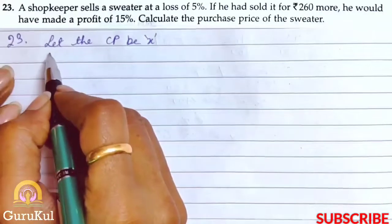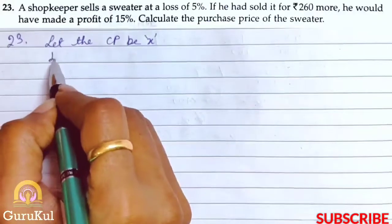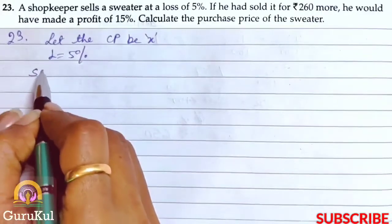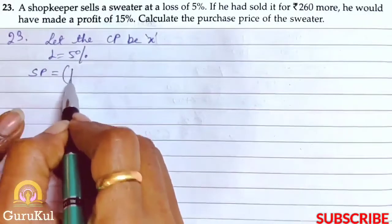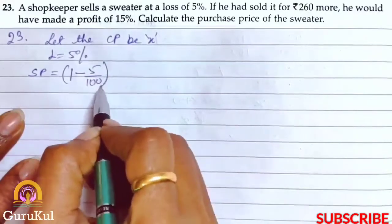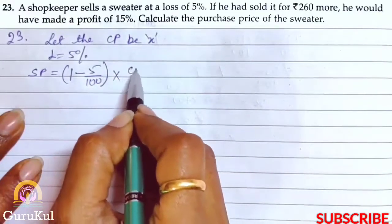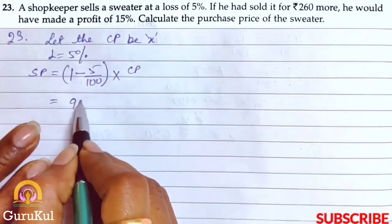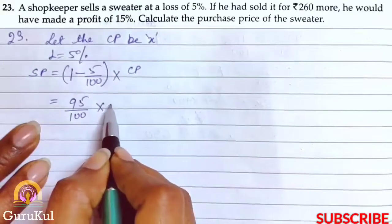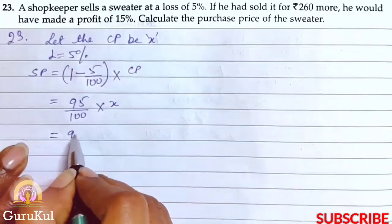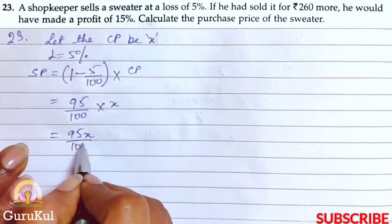Let the cost price be x. In the first case, the shopkeeper made a loss of 5%. So SP will be 1 minus 5 by 100 bracket closed into CP. That will be 95 by 100 into x. Therefore SP is 95x by 100.